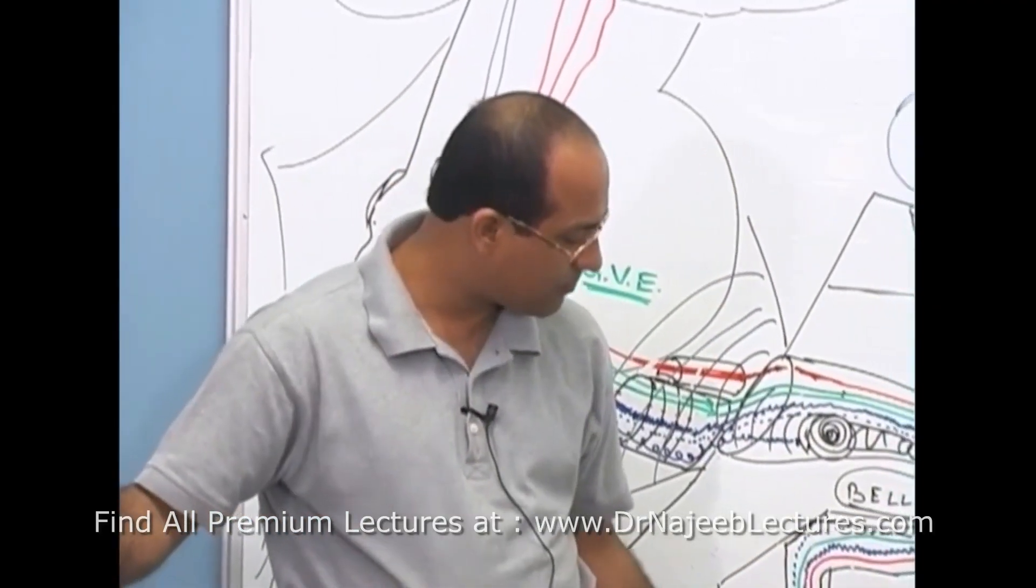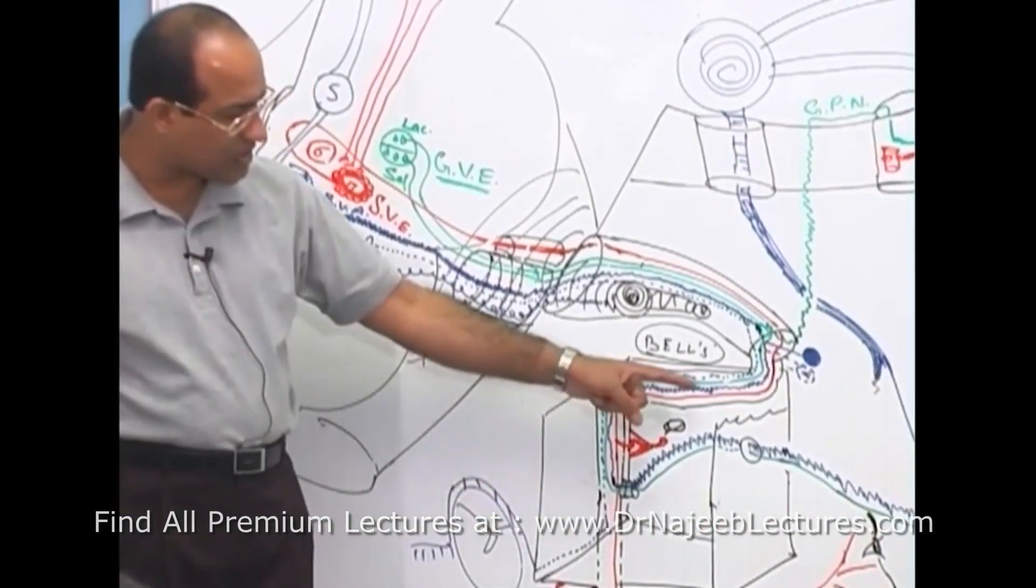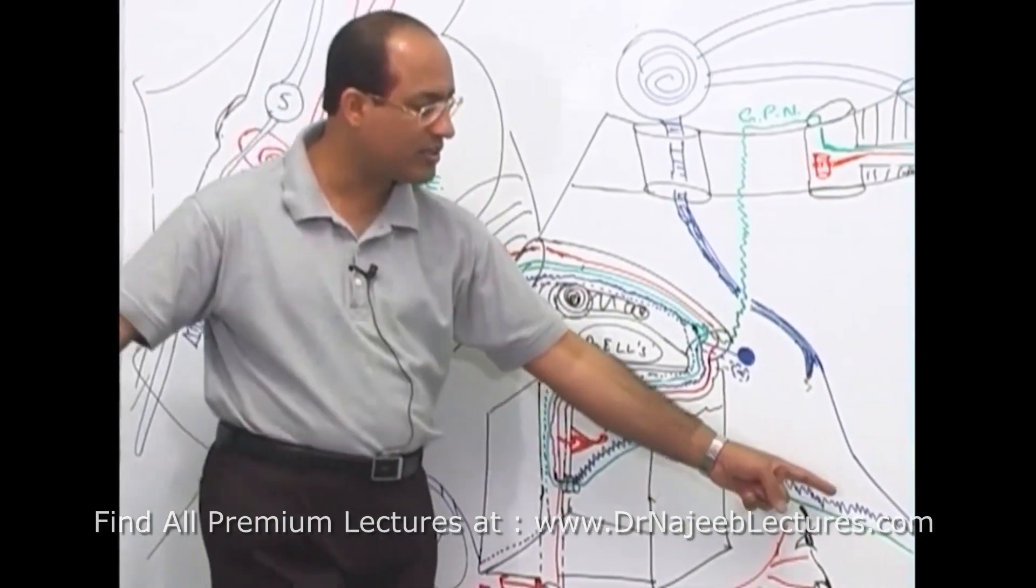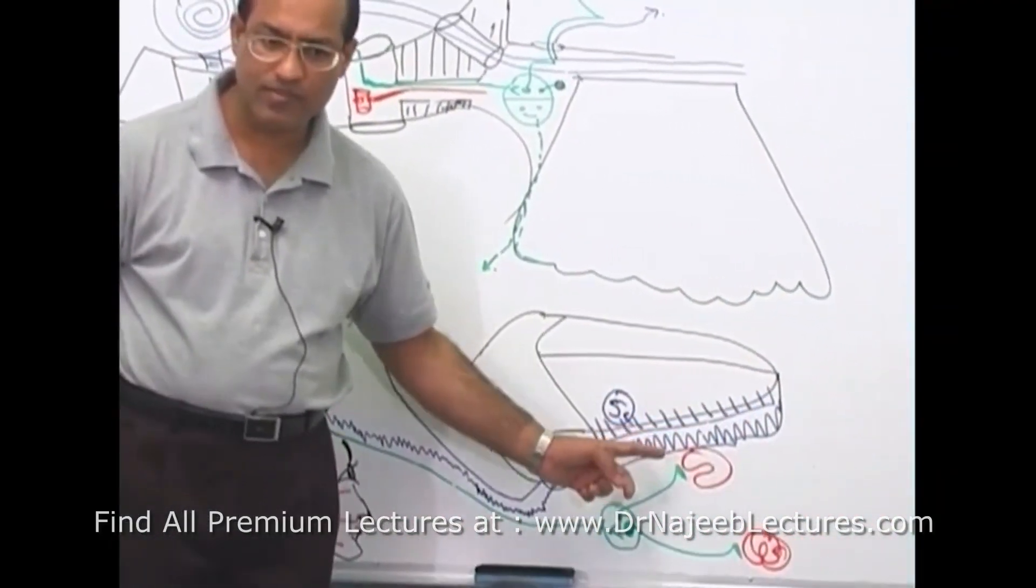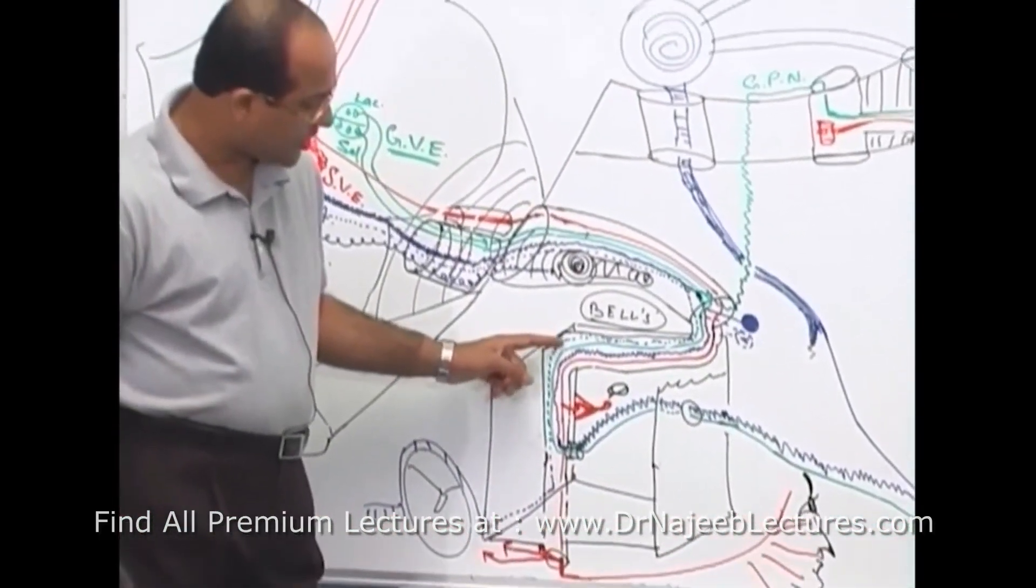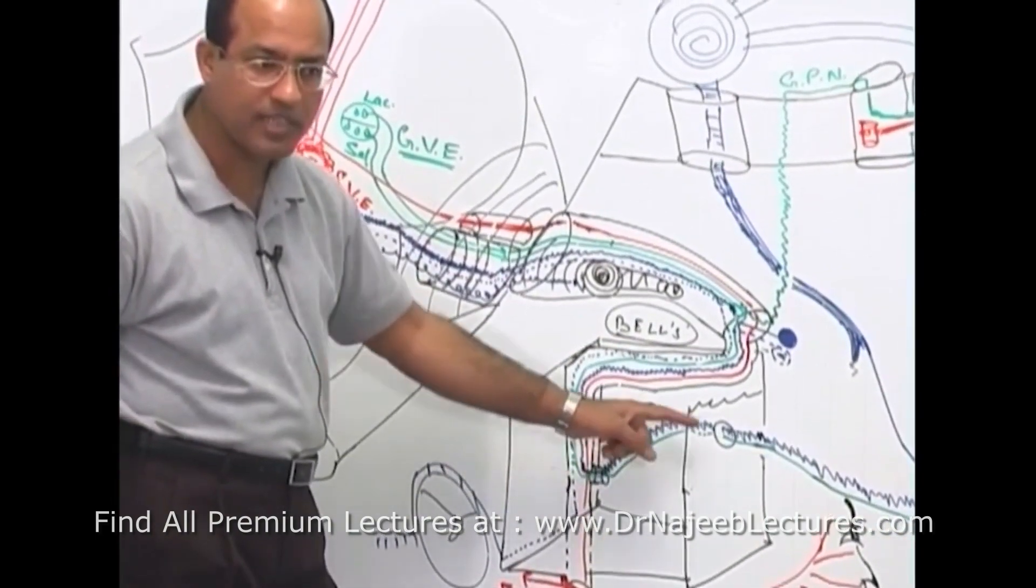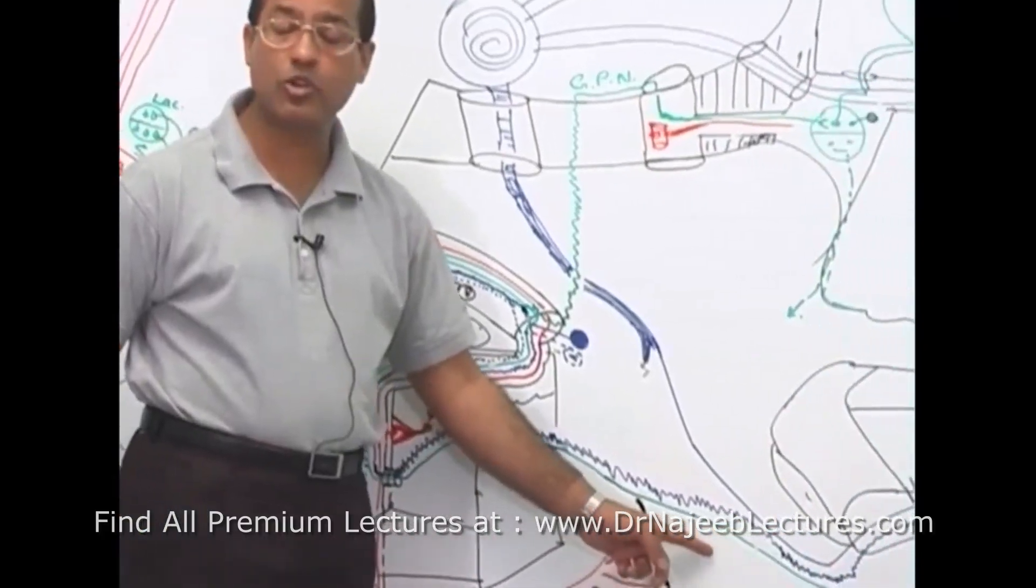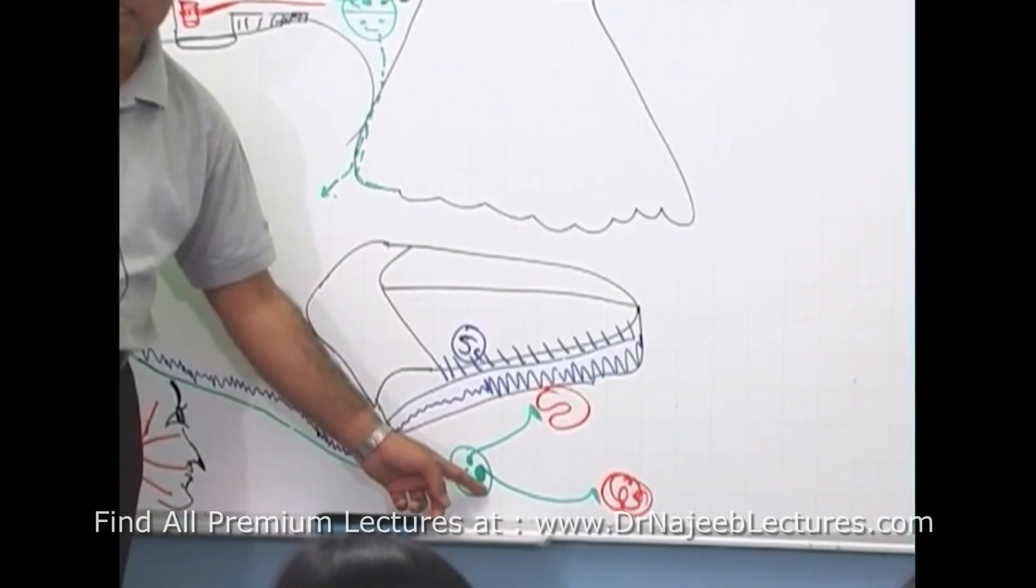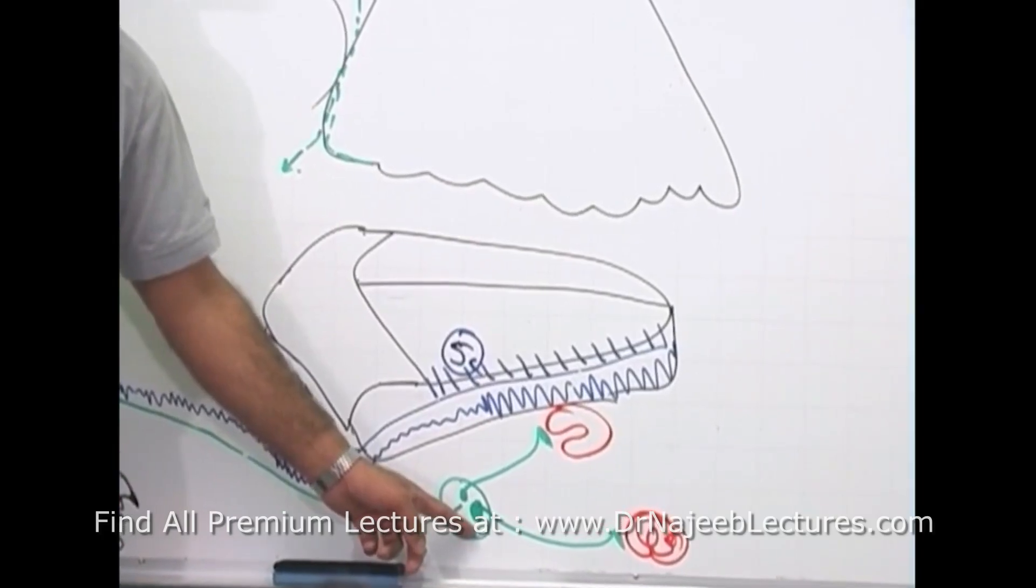Then, along with all these things, if problem becomes severe, do you think these taste fibers will be working or they will also lose their function? So, anterior two-thirds of the tongue may lose its gustatory sensations. And in very severe case, even, you know what is this? These fibers, parasympathetic fibers, which are going for salivatory function through the chorda tympani, they are also degenerated or they lose their axonal function and that may end up into partial dryness of the oral cavity.